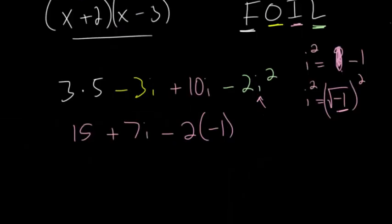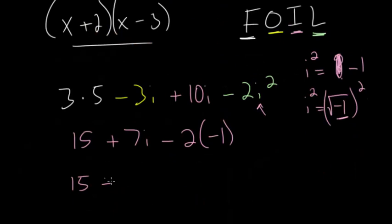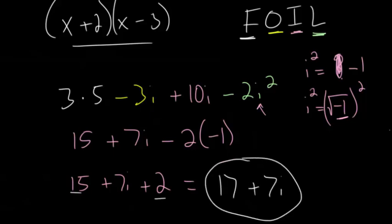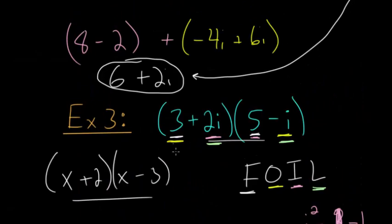And now, finally simplifying everything, we have 15 plus 7i plus 2. And then combining the real parts together, we have 17 plus 7i. So when we multiply these two complex numbers together, we get 17 plus 7i.